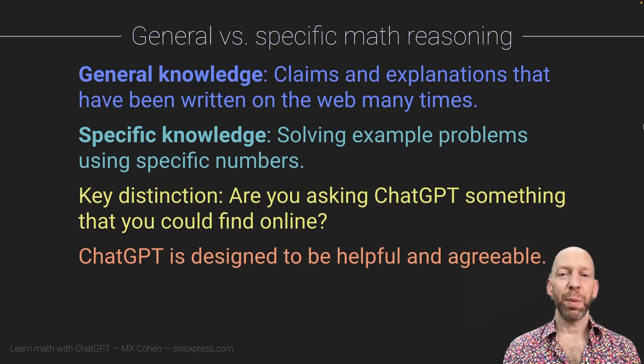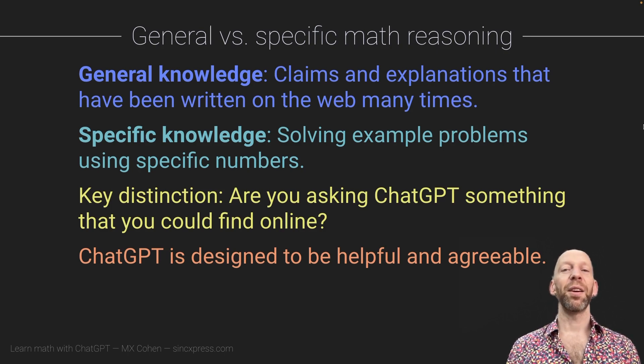One thing to know about ChatGPT, which is normally a good thing for computers and human-computer interaction, but maybe not so much about ChatGPT, is that ChatGPT is designed to be helpful and agreeable. It doesn't like to disagree with you.